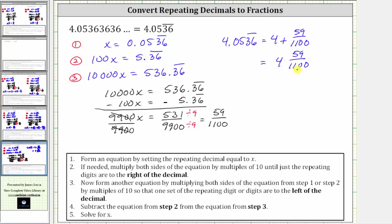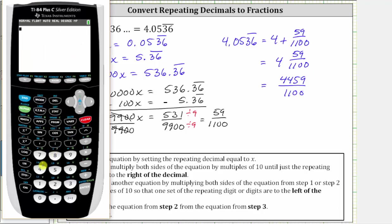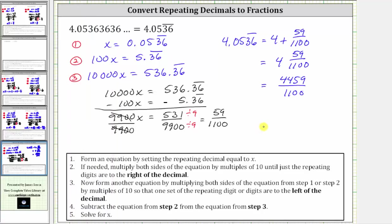If we want this as an improper fraction, the denominator remains 1,100, and the numerator is 1,100 times four plus 59, which equals 4,459. We can verify this on the calculator by taking 4,459 and dividing by 1,100, which gives us the original decimal of 4.0536 with the three and six repeating. Just be aware that in the rightmost digit, the calculator is rounding. I hope you found this helpful.